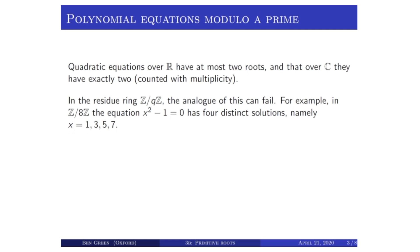For instance, if q is eight, the equation x squared equals one has four solutions modulo eight — namely x equals one, three, five, and seven. For all of those values of x, x squared is congruent to one modulo eight. So the fact that an equation of degree two has at most two roots is not a fact in z mod q z in general.